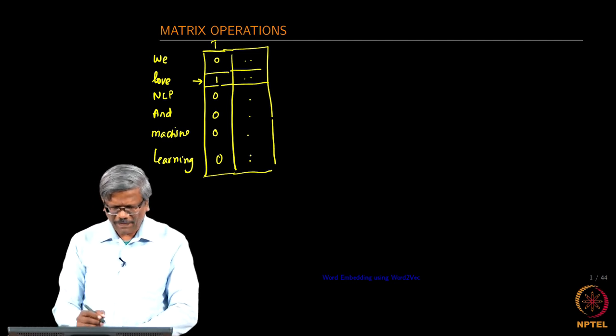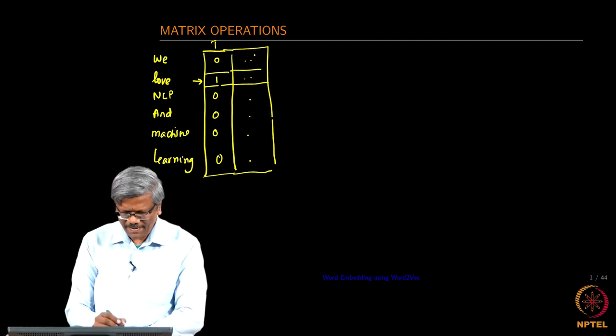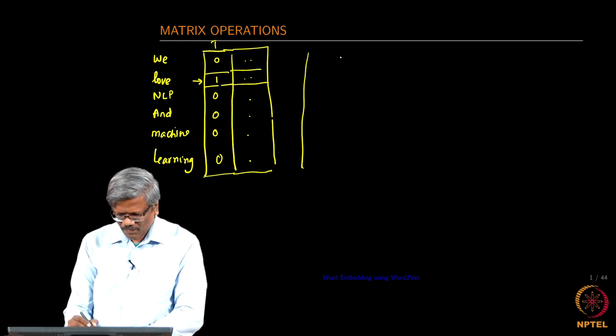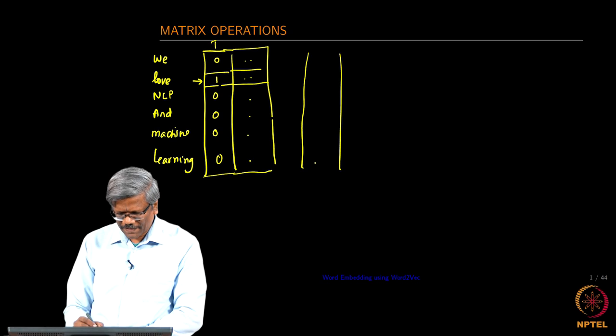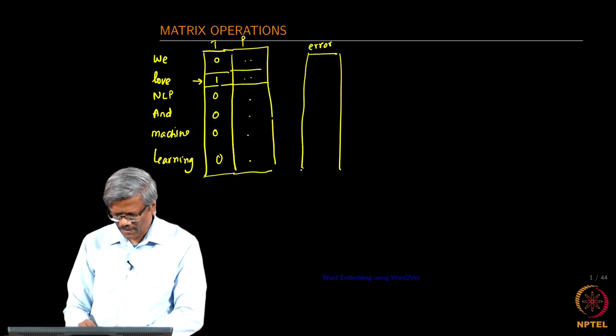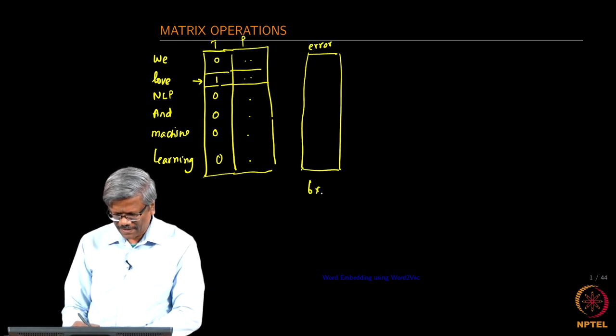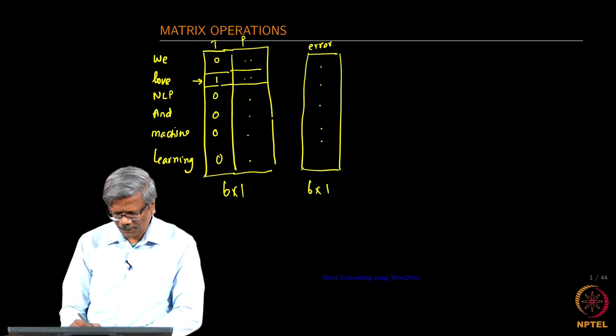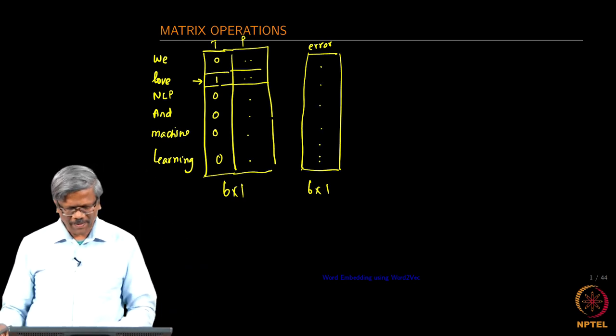Now, what we do is we have to find the difference between the target and the predicted value. This is our error. Error is also going to have the same size as the target and the predicted value. We have 1, 2, 3, 4, 5 and 6 values.